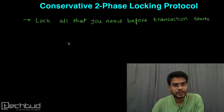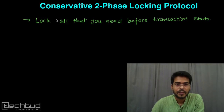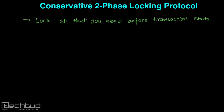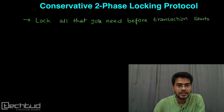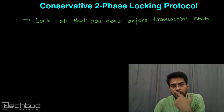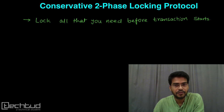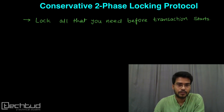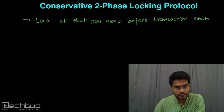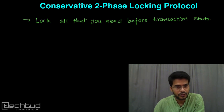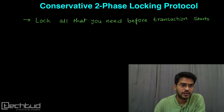Hello everyone, welcome back to tech2.com. In this lecture we will study conservative two-phase locking protocol. In the last lecture we studied basic two-phase locking protocol where we faced a few problems: we were getting deadlock situations, cascading rollback, and there was a wait involved due to early locking of the data item.